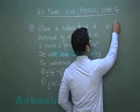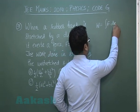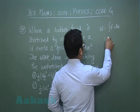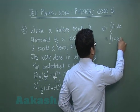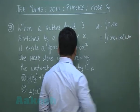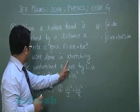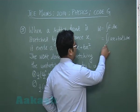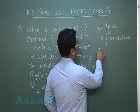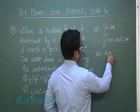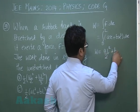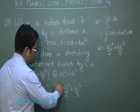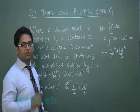The work done is W = ∫f dx. Since we are in one dimension, this becomes ∫(ax + bx²) dx. The rubber stretches from x = 0 to x = L, so integrating gives W = aL²/2 + bL³/3. This leads to option D.